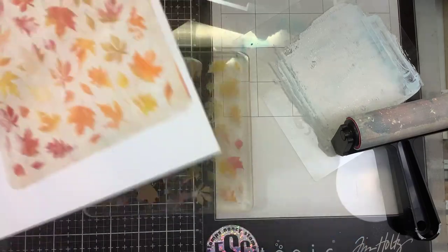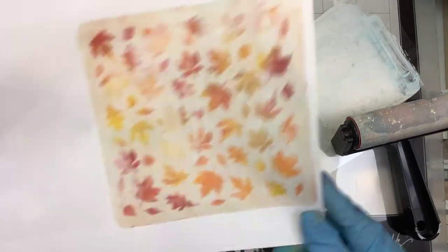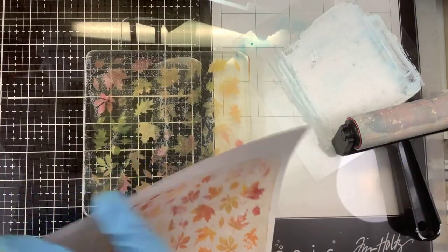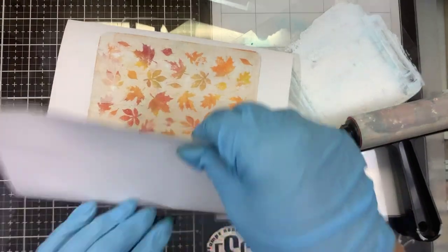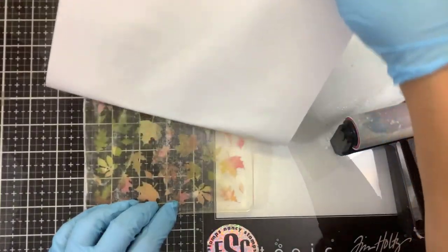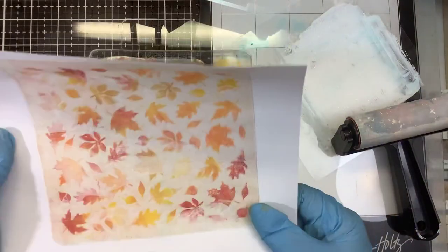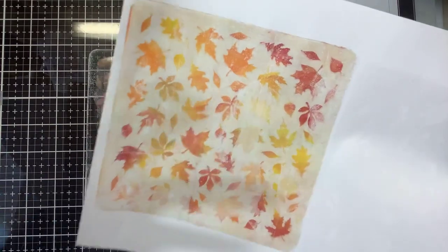So the second print didn't pull up, but we can see that there's still pan pastel on there. So I think if we just add some paint, the paint will reactivate it and pull it up. Let's try that. And this is dry. I can stamp on this now, die cut it, whatever I need to do.